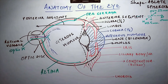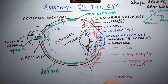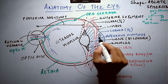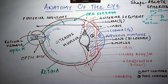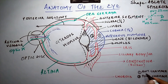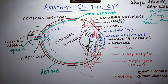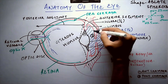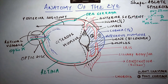The anterior segment includes the lens, the ciliary body, the iris, aqueous humour, and the cornea. It can further be divided into two chambers based on where the aqueous humour is present: the anterior chamber and the posterior chamber. The anterior chamber is bordered anteriorly by the posterior surface of the cornea and posteriorly by the anterior surface of the iris, the anterior part of the lens, and the ciliary body.